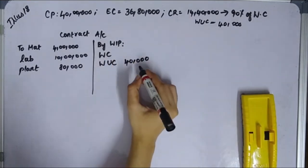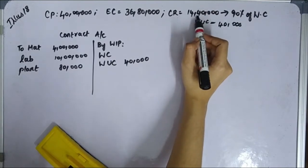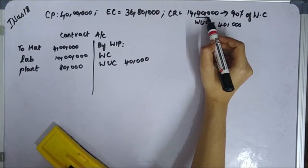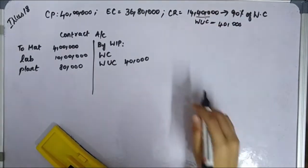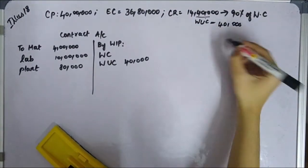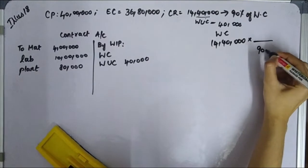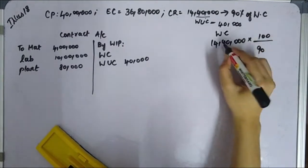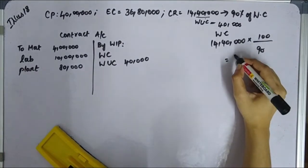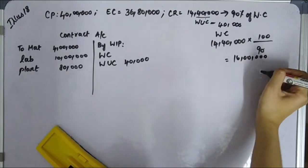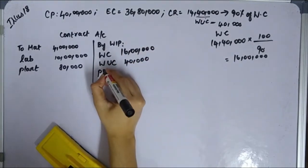Work certified: cash received is 14,40,000, which is 90% of work certified. Cross-multiplying — work certified is 14,40,000 divided by 90% — gives us work certified of 16,00,000.